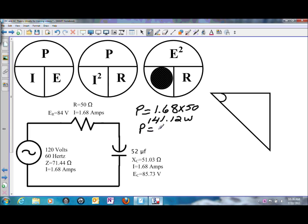And then I times E for the capacitor. 1.68 amps of current flow times 85.73 volts will give us a reactive power or the VARs. That's 144.02 VARs.